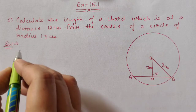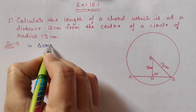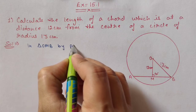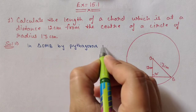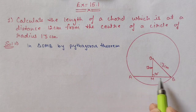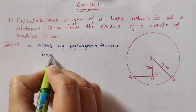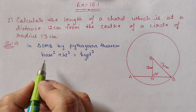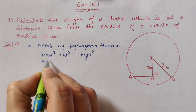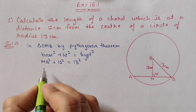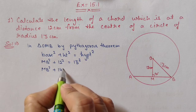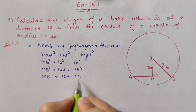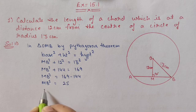Consider triangle OMB — this is a right triangle, so we can use the Pythagorean theorem. Base squared plus height squared equals hypotenuse squared. The base is MB, height is 12, and hypotenuse is 13. So MB² + 144 = 169. Shifting 144 to the other side gives MB² = 25, which we write as 5².